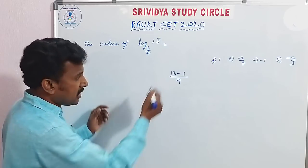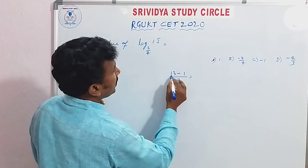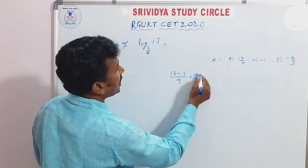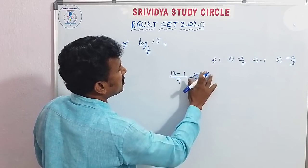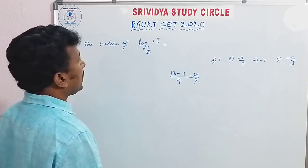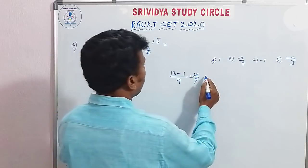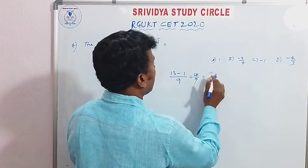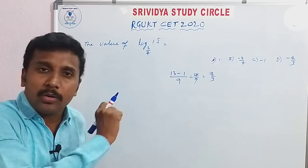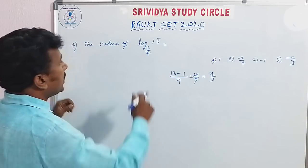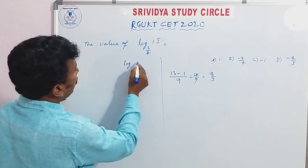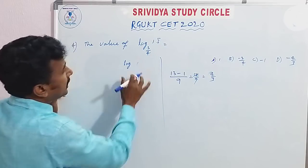The denominator level: 1.3 bar equals 12 by 9, which simplifies to 4 by 3. So now we have log base (3/4) of (4/3). Since 4/3 is the reciprocal of 3/4, this equals log base (3/4) of (3/4)^(minus 1).